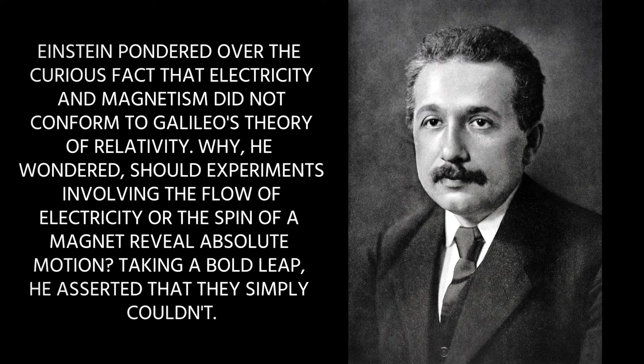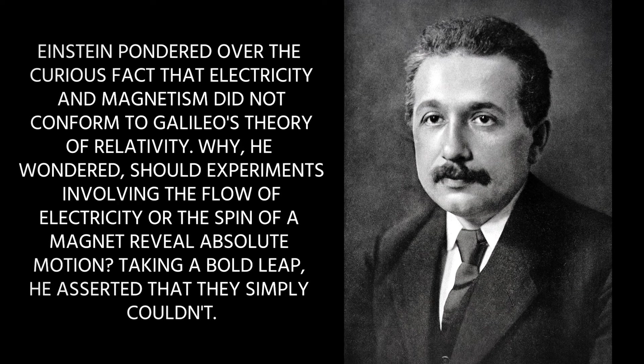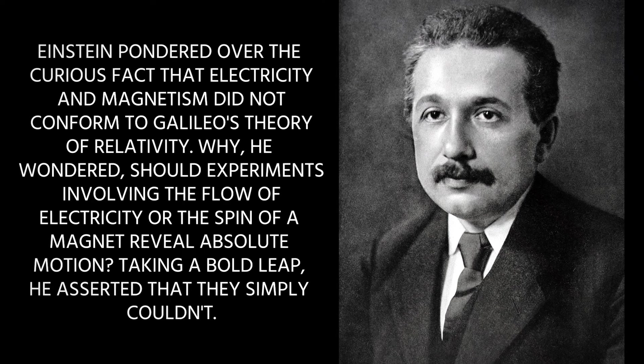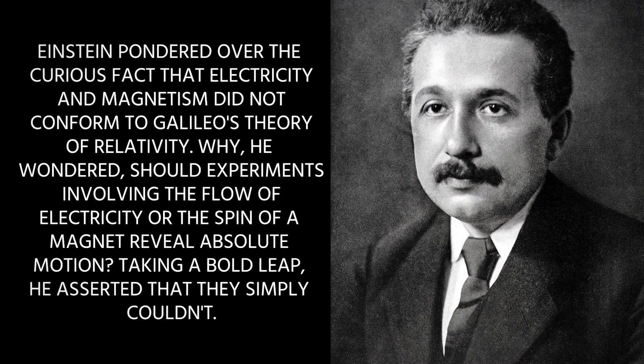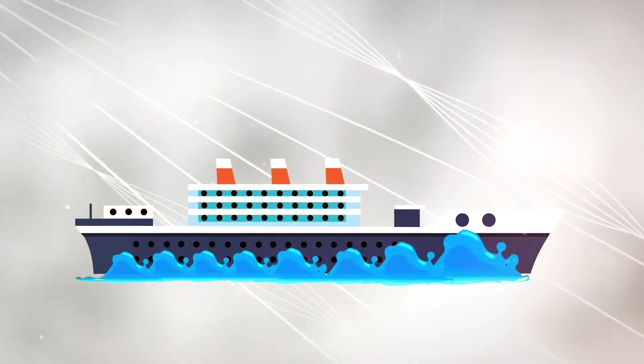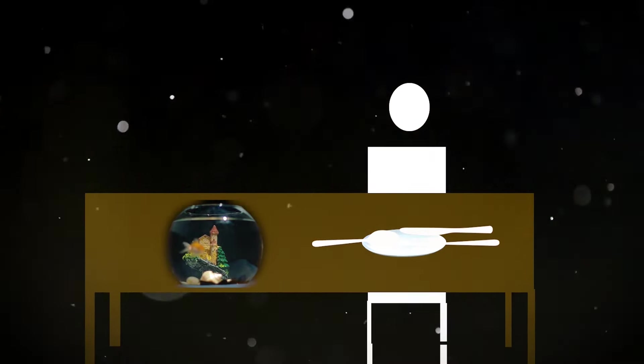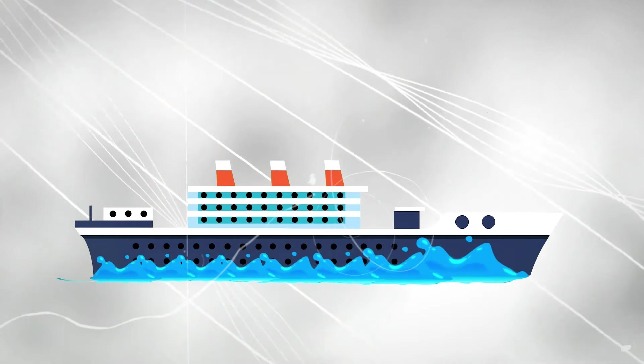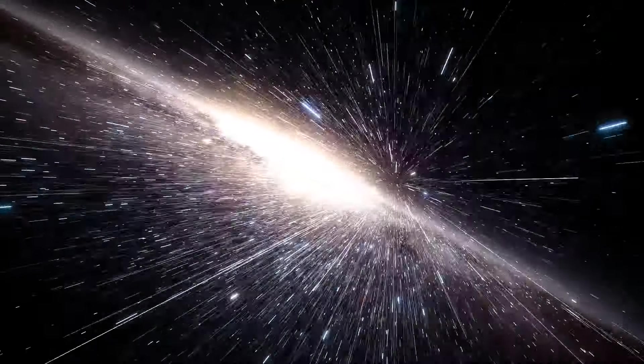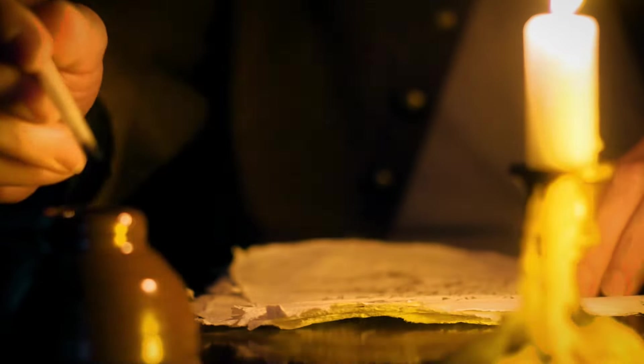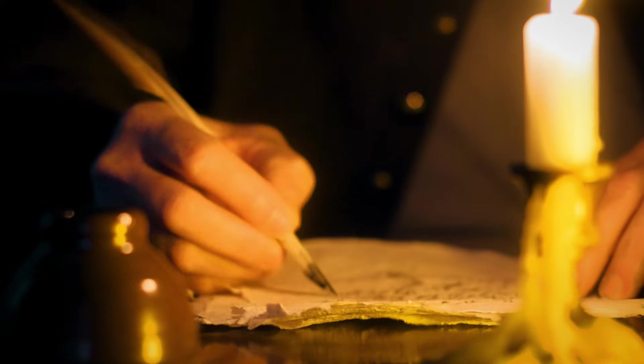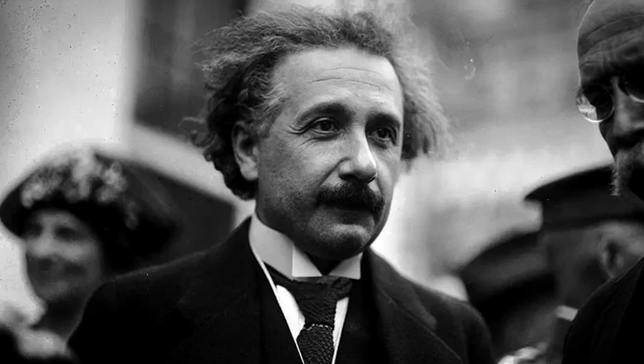Einstein pondered over the curious fact that electricity and magnetism did not conform to Galileo's theory of relativity. Why, he wondered, should experiments involving the flow of electricity or the spin of a magnet reveal absolute motion? Taking a bold leap, he asserted that they simply couldn't, and thus the special theory of relativity was born. In his imaginative scenario aboard Galileo's ship, Einstein proposed that all experiments would yield identical results, whether the ship was anchored in port or smoothly sailing on a calm sea. Tossing a ball wouldn't indicate the ship's motion, and surprisingly, even measuring the speed of light wouldn't either. Einstein's groundbreaking revelation was that the speed of light in a vacuum remained constant regardless of its source. This statement contradicted Newtonian mechanics, where speeds could be added together, and each observer would measure different speeds based on their own motion. However, according to Einstein, this did not apply to light. Everyone would measure the same speed, whether the ship was stationary, cruising at 50 knots, or blazing at 50,000.